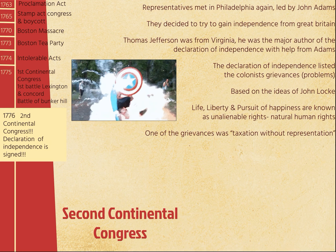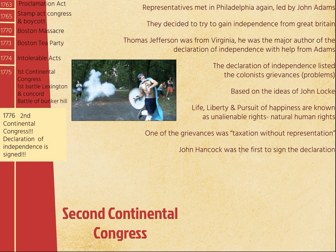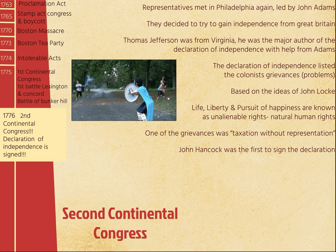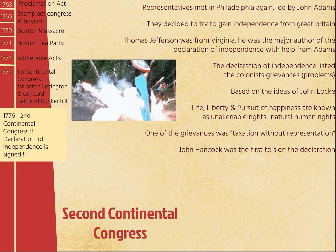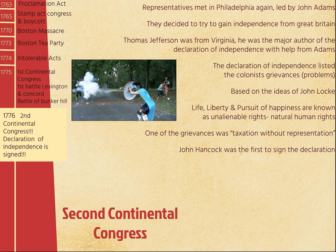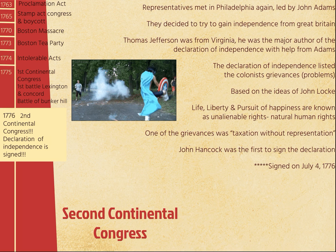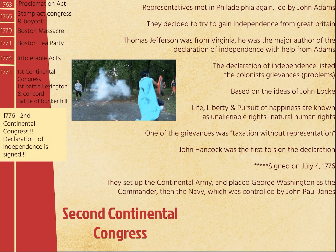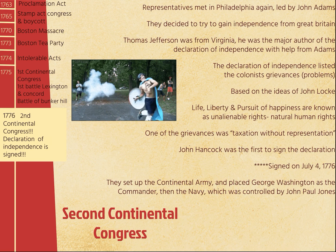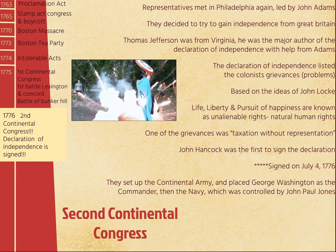One of the grievances was taxation without representation. John Hancock was the first to sign the Declaration — he wrote his name real big and bold right in the middle, so it's pretty much the only name you can pick out. It was signed on July 4th, 1776 — a very important date. They also set up the Continental Army and placed Washington as the commander, then the Navy, which was controlled by John Paul Jones.